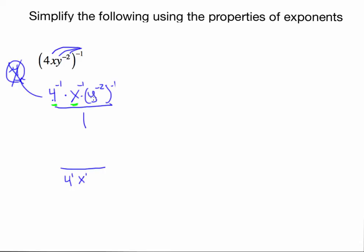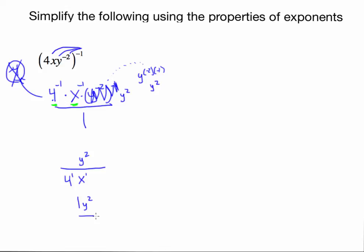Taking 4 to the negative 1 and bringing it down makes it 4 to the positive 1. This x to the negative 1 will be brought down to become x to the positive 1. Now looking at y to the negative 2 to the negative 1 — this isn't simplified yet. If I'm raising this power to a power, I can write this as y to the negative 2 times negative 1, which is y to the positive 2. So after simplifying this quantity, it becomes y squared — I don't actually have to move that to the other side of the fraction.